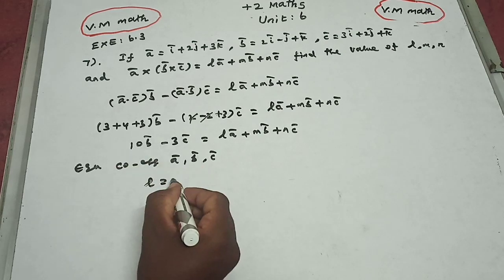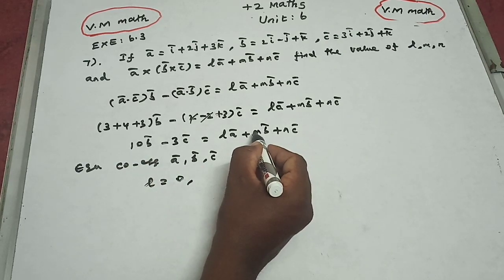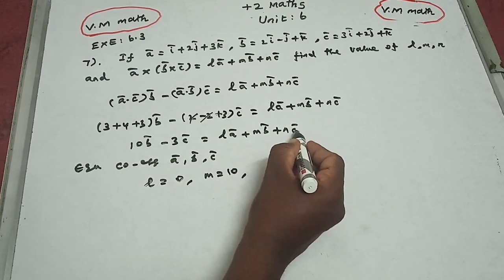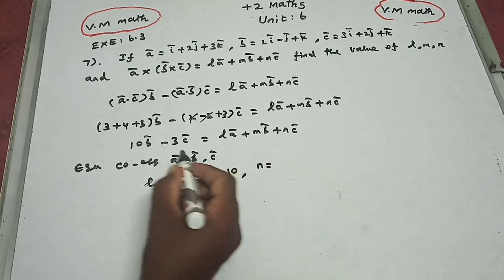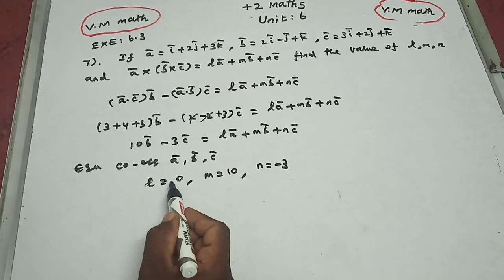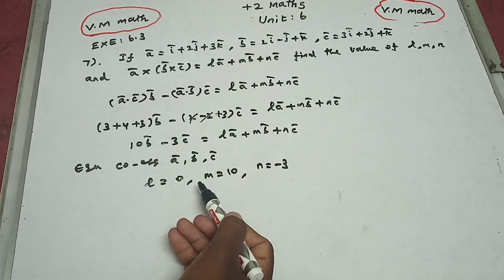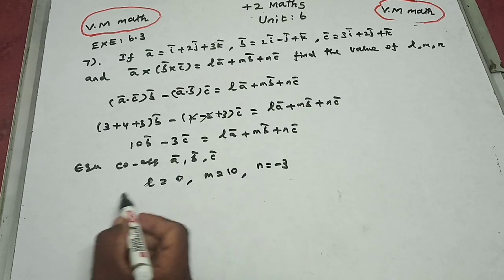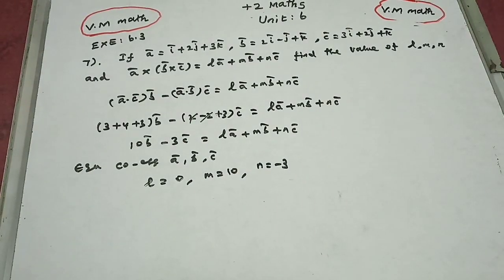So lmn equals 0 × 10 × (-3) = minus 3. Thank you so much for watching this channel, subscribe and like this video.